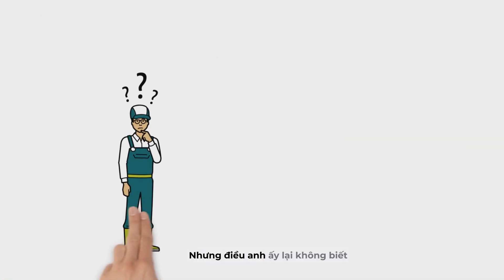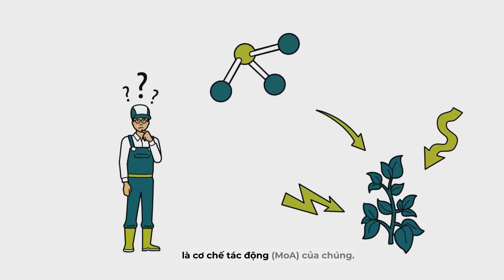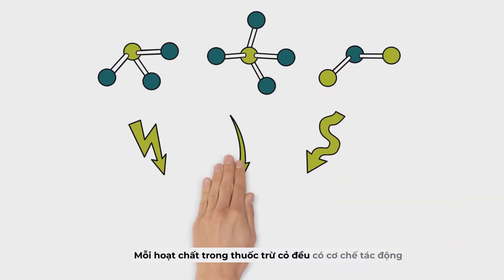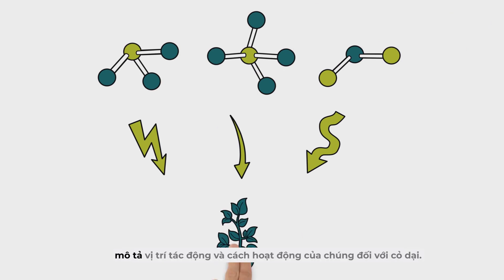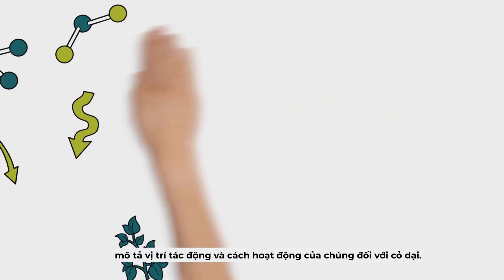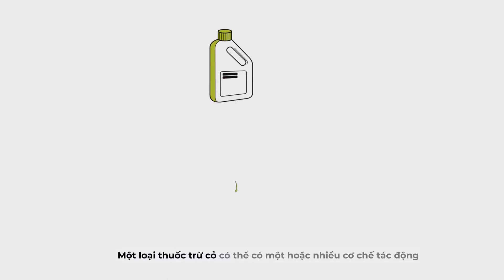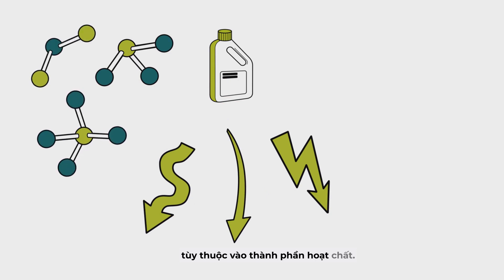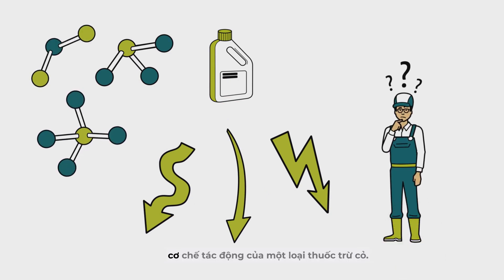But what he doesn't know is the chemical's mode of action. Each chemical in a herbicide has a mode of action which describes where and how it works on the target plant. A herbicide may have one or multiple modes of action depending on which chemical components it contains. So it's not always easy for Bruno to know a herbicide's modes of action.